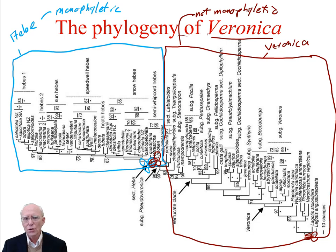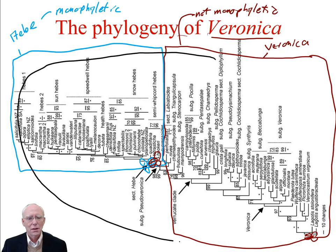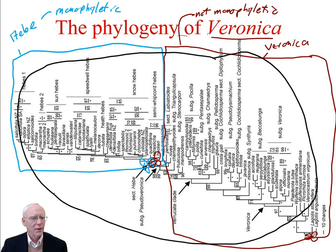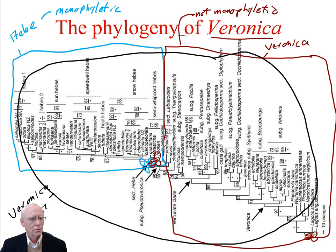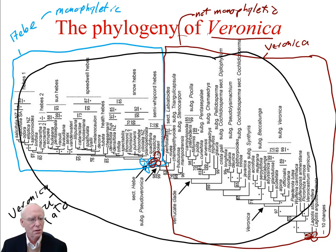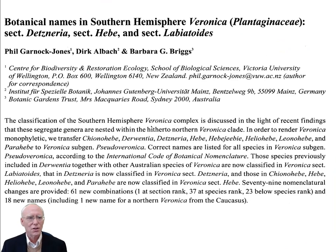About the only thing we can do is take all these Hebes and all these Veronicas and put them in one new group, making a new Veronica sensu lato. And that is, in fact, exactly what was done.